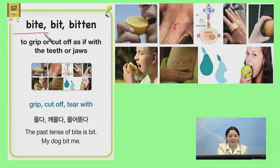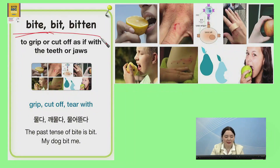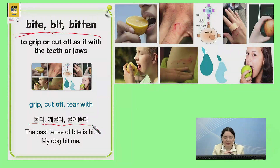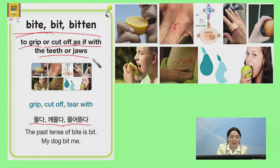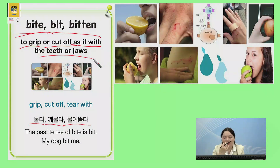The next word is bite. Bite. Past tense: bit, bitten. 한국말로 설명하면 물다, 깨물다, 또는 물어 뜯다. 영어로 설명하면 to grip, 잡다, or cut off, 깨물다, as if with the teeth or jaws. 그 턱이나 그 이빨로 무는 거예요.